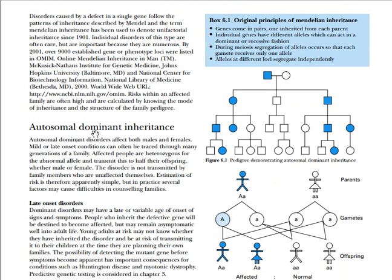Since alleles can either be expressed as autosomal dominant or recessive, we need to know about autosomal dominant inheritance. The term 'autosomal' means it constitutes the 22 pairs of chromosomes, which are involved with the production of the somatic part of the human body. All cells that constitute the phenotype of the human body are the autosomes.